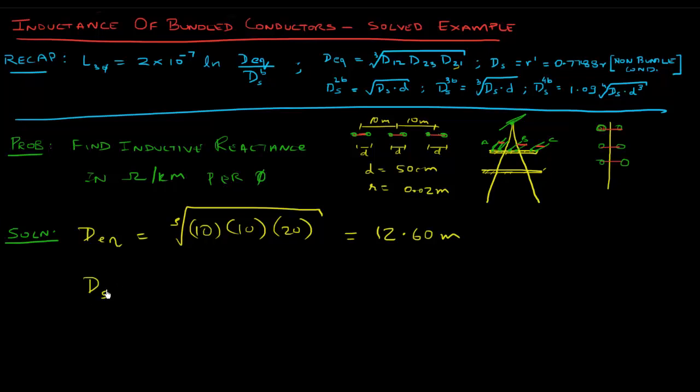What is your ds? This is a two bundle situation, so we're going to use this formula right here. So ds2b, which is this right here, is going to be - ds we know is 0.7788 times r. So let's do that: 0.7788 times r is 0.02 meters, and so that's ds. What is d? d is 50 centimeters, so that's 0.5 meters, and square root of that should give us 0.09 meters.